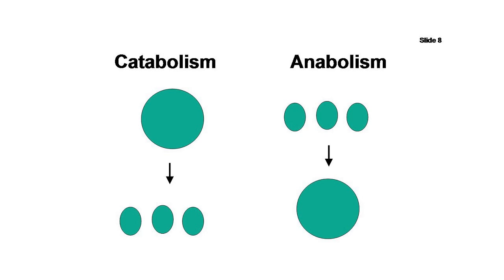Anabolism, on the other hand, is the building up of simple molecules and atoms into more complex ones. So, protein synthesis from amino acids is an example of anabolism.